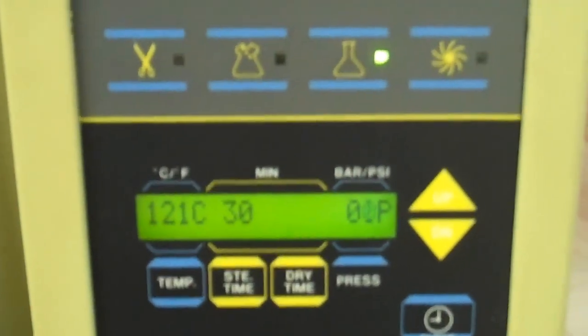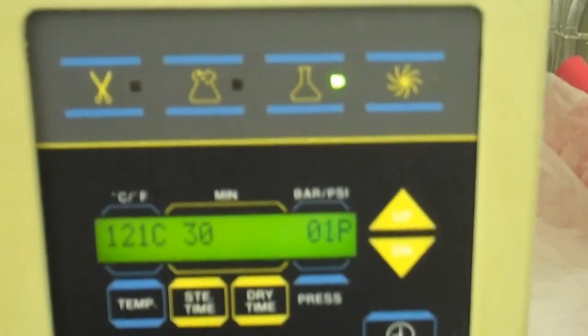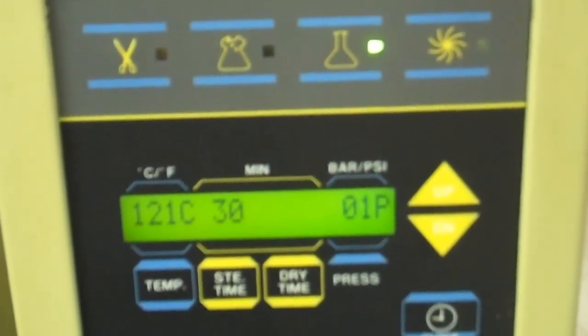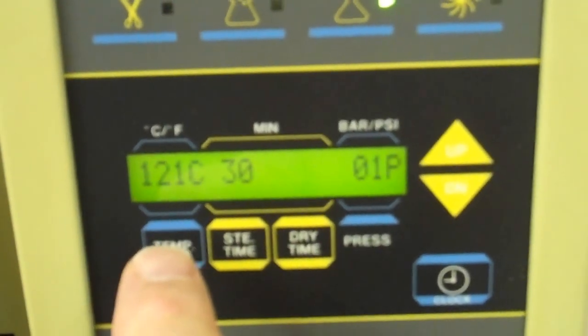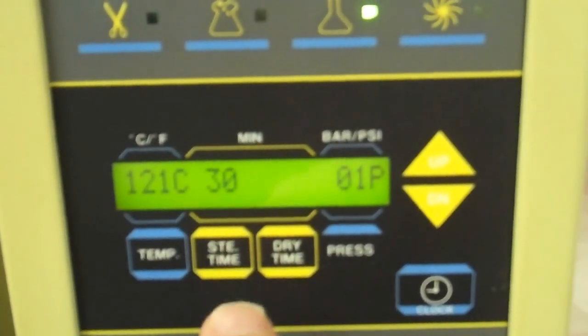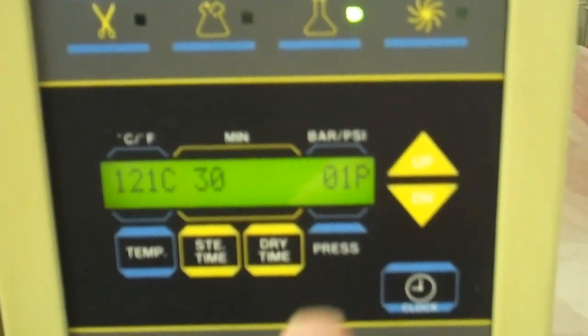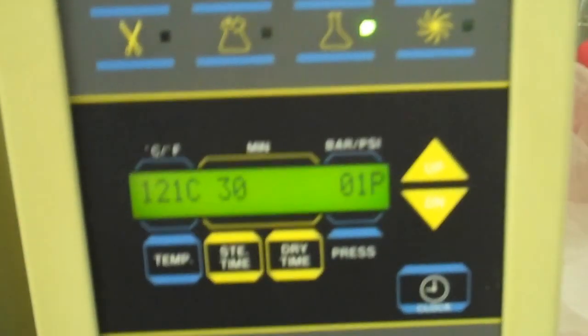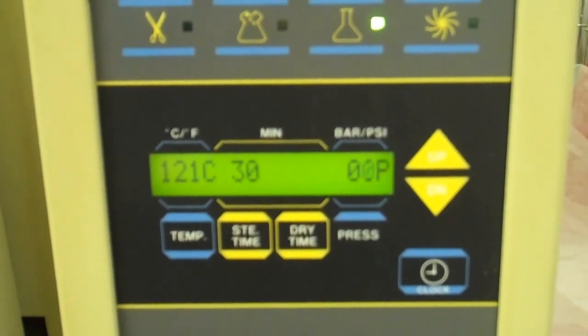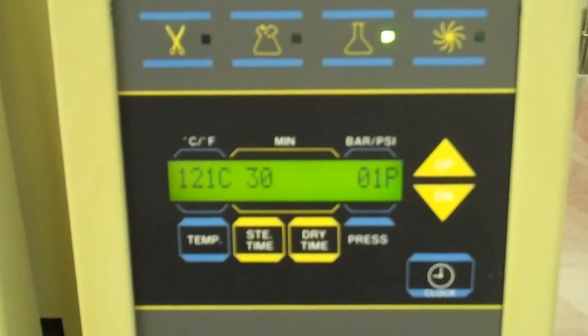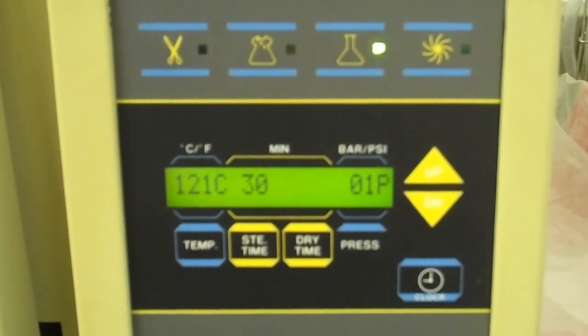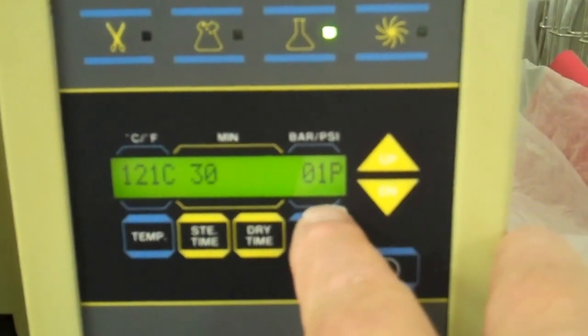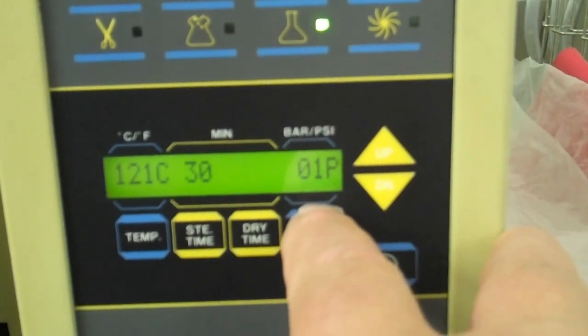The cycle panel shows that we're in the cycle for media. As you can see, the temperature is 121°C and the time is set for 30 minutes. On the right-hand side there's the pressure in the chamber. When you initiate a cycle, the first thing it'll do is pump water into the chamber, then it will heat up the water to 121°C. When it achieves that, you'll also see that the pressure goes up to about 16 pounds of pressure.